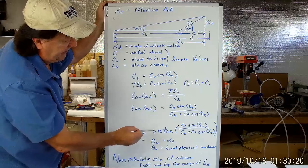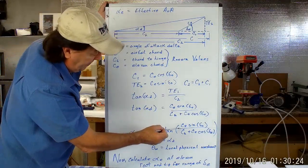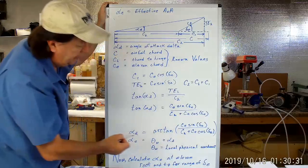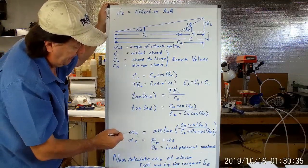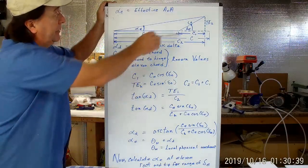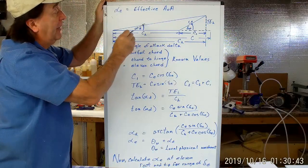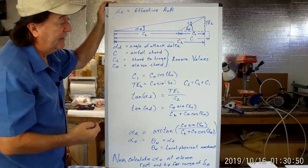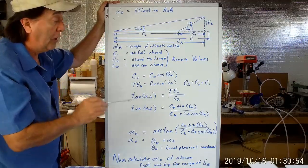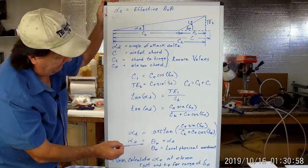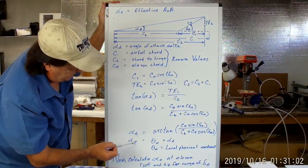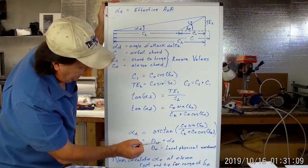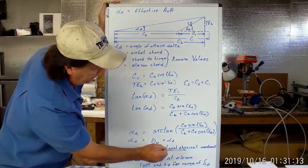Alpha sub D is the arc tangent — the inverse tangent — of that same value. This is the equation we're concerned with. We have the values for any given elevon deflection, and we can calculate alpha sub D for any elevon deflection. As the elevon moves up and down, we find this new value for the relative chord line — the revised aerodynamic chord line, which becomes an effective washout chord line.